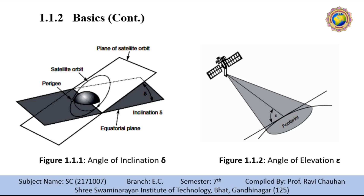If the satellite does not have a circular orbit, the closest point to the earth is called the perigee. Figure two shows the elevation angle epsilon (ε), defined as the angle between the center of the satellite beam and the plane tangential to the earth's surface. The so-called footprint can be defined as the area on earth where the signal of the satellite can be received.